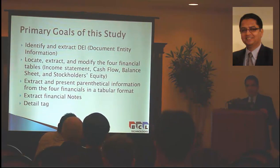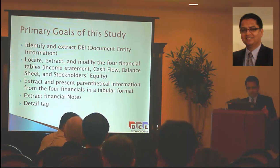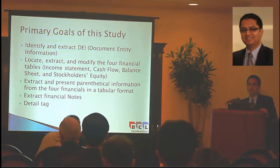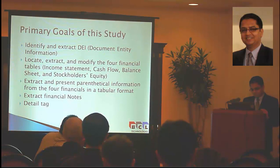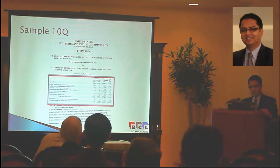For this study, our goal is to locate, identify, and extract DEI document information. Secondly, to locate, extract, and identify the four financial tables: cash flow statement, balance sheet, and income statement. This is a sample 10-Q. In the beginning section we get the DEI, and the four financial tables are found in another part of the 10-Q.